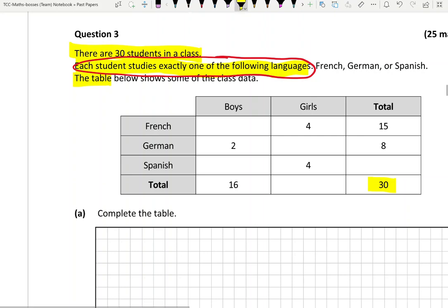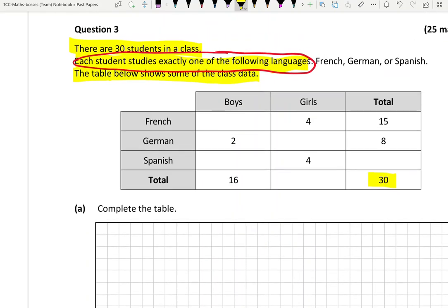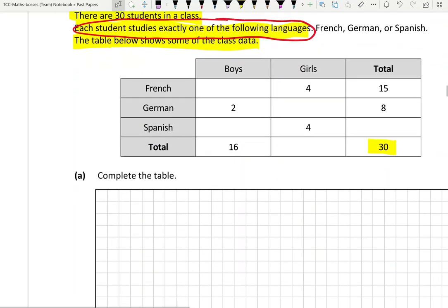The table below shows some of the data. That's the situation - there's 30 students in the class. Let's read the first question: complete the table. Very good, so we're going to be putting our numbers in and we'll do our calculations down below and put our answers in above.